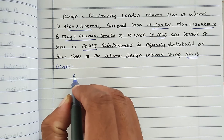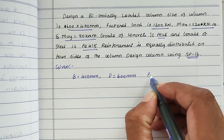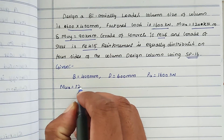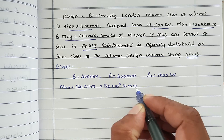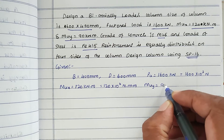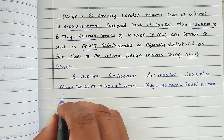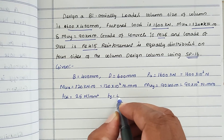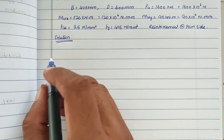Given data: B = 400 mm, D = 600 mm, PU = 1600 kN (1600×10³ N), MUX = 120 kN·m (120×10⁶ N·mm), MUY = 90 kN·m (90×10⁶ N·mm), fck = 25 N/mm², fy = 415 N/mm², reinforcement on 4 sides.